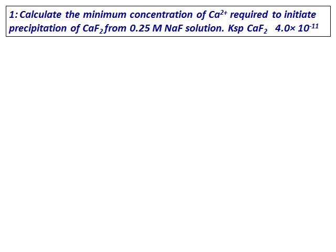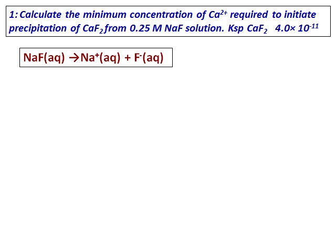Calculate the minimum concentration of calcium ions required to initiate precipitation of calcium fluoride from a 0.25 molar sodium fluoride solution. The Ksp of calcium fluoride is given. So how do we proceed with these kinds of questions? We are asking the concentration of calcium ions. From the solubility product equation, we have to calculate the concentration of calcium ions.